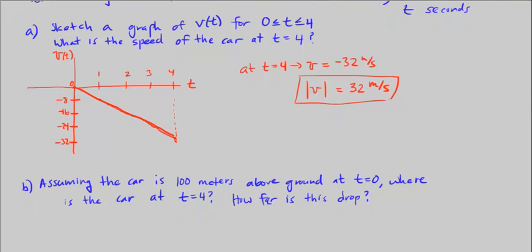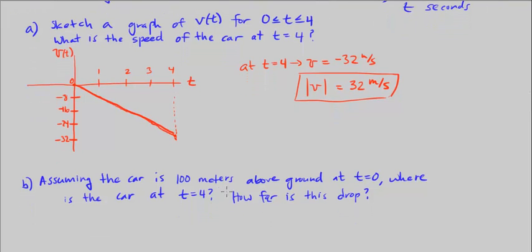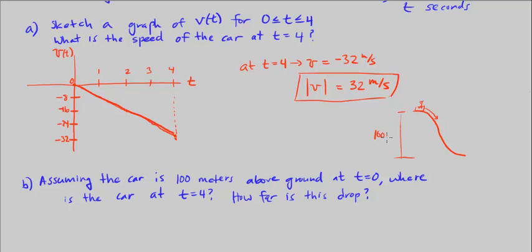Now Part B: assuming the car is 100 meters above ground at time t equals 0, where is the car at t equals 4 seconds? Let's say this is the car going down, and this height is 100 meters.